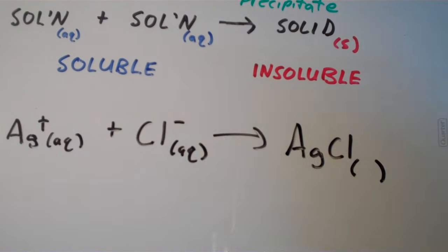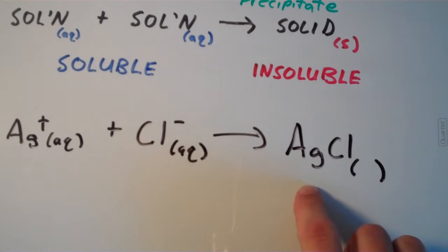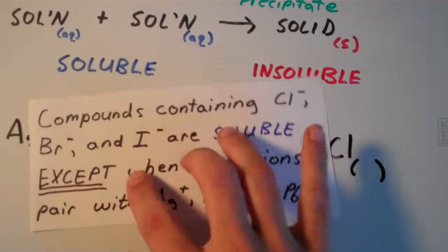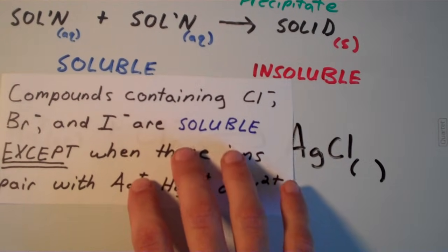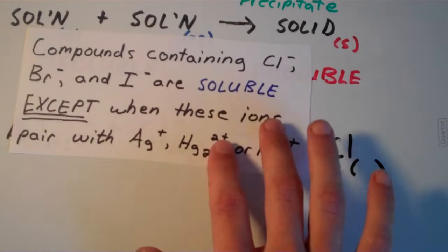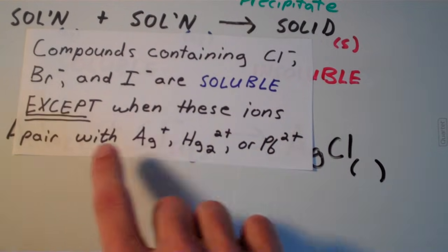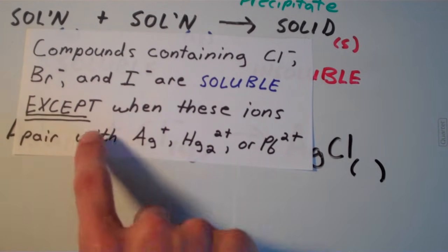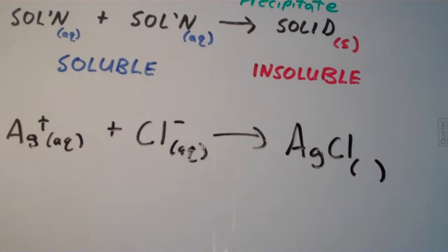Now we have to assign the state of matter that AgCl is in — is it solid or aqueous? That's where the solubility rules come in handy. Looking at the solubility rules for AgCl: compounds containing chloride ion, bromide ion, and iodide ion are generally soluble. But read the rest of the rule — chloride, bromide, and iodide are soluble except when these ions pair with silver ion, mercury(II) ion, or lead(II) ion. So AgCl is actually going to be insoluble because of that exception. Silver is one of the exceptions, so we attach S in parentheses instead of AQ.